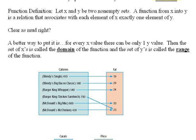Now, I realize that's not very clear of a definition. So, a better way to put it would be to say for every x value, there can be only one y value. So, every time you have an x value, you can only have one y value.